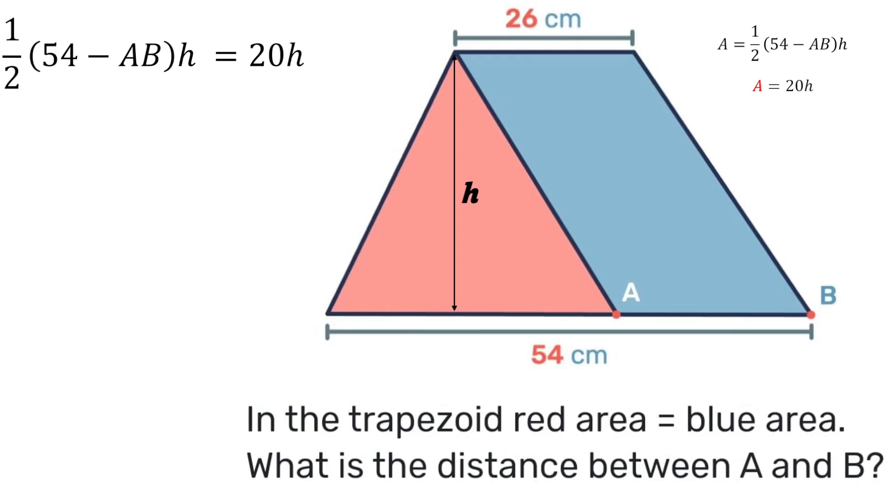In solving this equation we should notice that we're multiplying by h on both sides, so we can cancel out h on both sides. So we have one half times 54 minus AB is equal to 20. Transposing the 2, instead of dividing by 2 we'll multiply by 2, so 20 times 2 gives you 40.